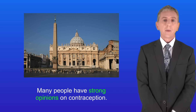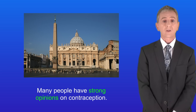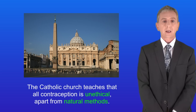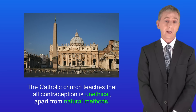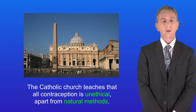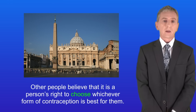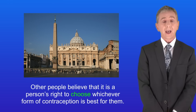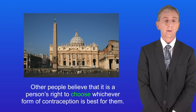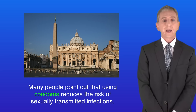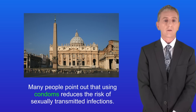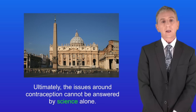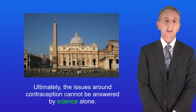Many people have strong opinions on contraception. For example, the Catholic Church teaches that all contraception is unethical apart from natural methods. Other people believe that it's a person's right to choose whichever form of contraception is best for them, and many point out that using condoms reduces the risk of sexually transmitted infections. So ultimately, the issues around contraception cannot be answered by science alone.